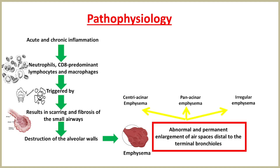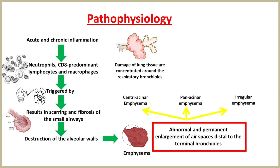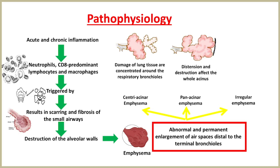In centriacinar emphysema, distension and damage of lung tissue are concentrated around the respiratory bronchioles, while the more distal alveolar ducts and alveoli are well preserved, and this form of emphysema is extremely common. Panacinar emphysema is associated with alpha-1 antitrypsin deficiency and is less common. Distension and destruction affect the whole acinus, and in severe cases the lung is just a collection of bullae. Severe airflow limitation and mismatch can occur due to panacinar emphysema.